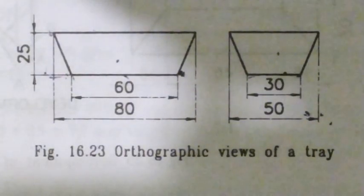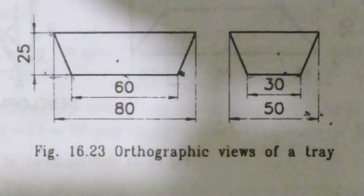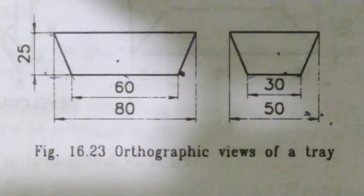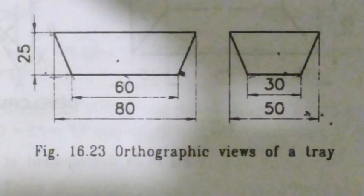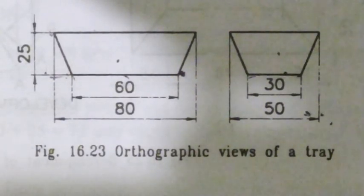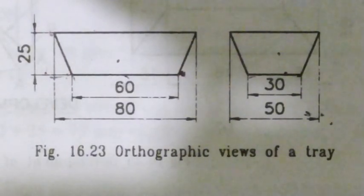Now we are going to start the development of a tray. We are going to find a front view and a side view. It's all about the dimensions. We are going to find the figure here.